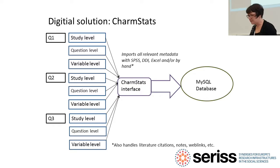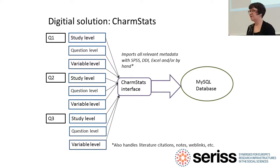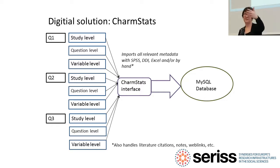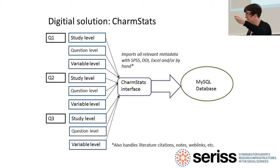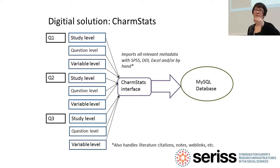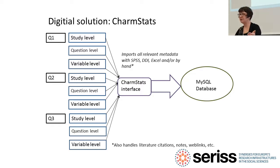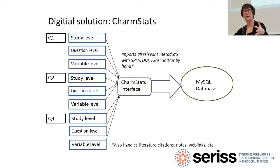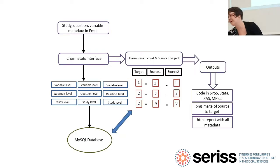How does CharmStats work and how is the information organized for documentation? For each variable, it connects three pieces of information: the study it came from, the question wording used as the stimulus, and all of the information on the variable itself — including its name, label, the coding, and the coding label. We use either SPSS or Excel as the most efficient way to import all of this metadata into the CharmStats MySQL database through the software interface.